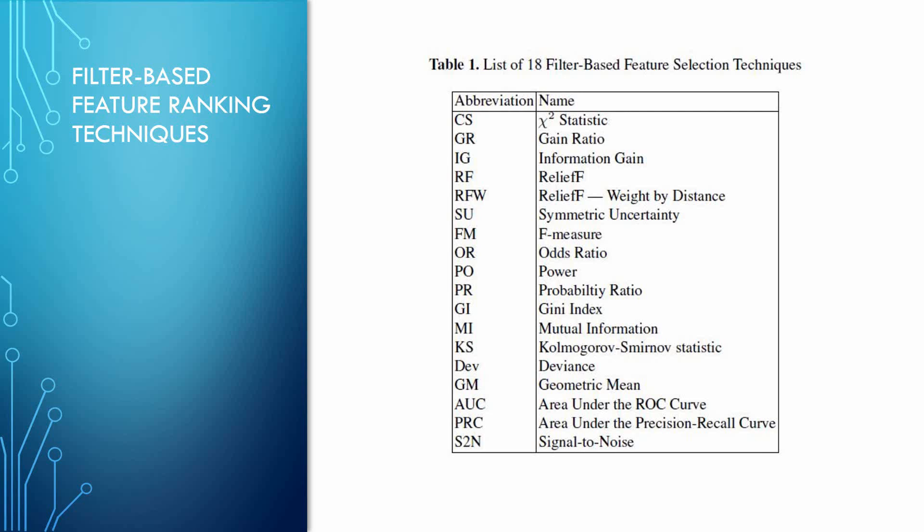Filter-based feature ranking techniques rank features independently without involving any learning algorithms. Feature ranking consists of scoring each feature according to a particular method, then selecting the features based on their scores. The baseline paper used 18 feature ranking techniques, mainly from three categories: six commonly used feature ranking techniques, eleven threshold-based feature selection techniques developed by the research team, and a new filter technique called Signal-to-Noise (S2N). Table 1 contains all the feature selection techniques used and their abbreviations.